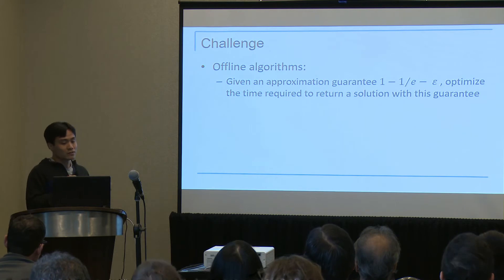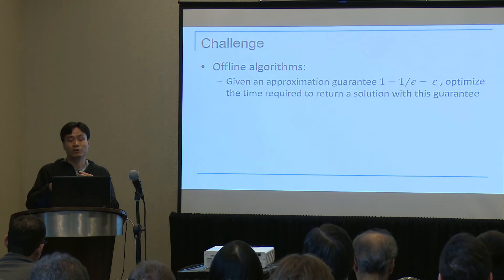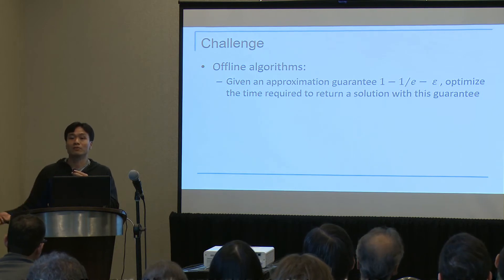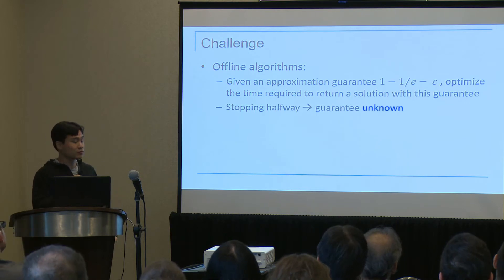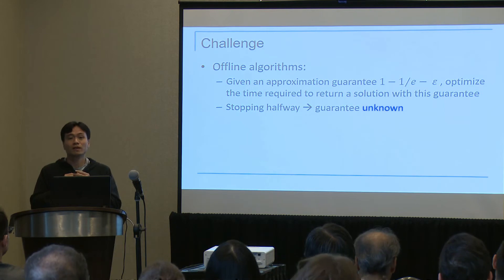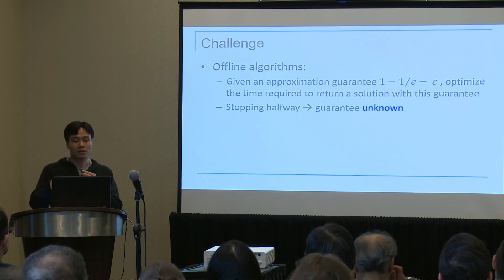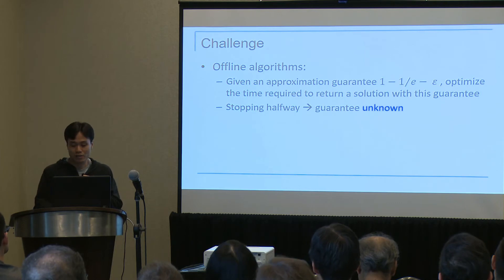We found that it's not easy to do, because by design, these algorithms take as input an approximation guarantee and run according to that guarantee. If you want to make them able to stop halfway, you need to make them run even when the approximation guarantee is unknown in advance — and that's just not easy to do.